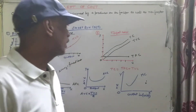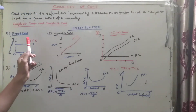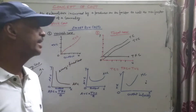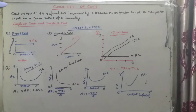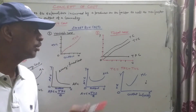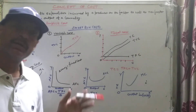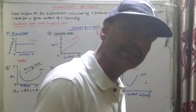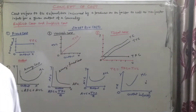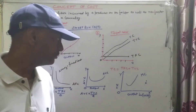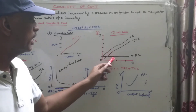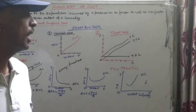Total cost is the sum of TFC and TVC — total fixed cost plus total variable cost gives you total cost. The TFC component remains constant, so the total cost curve runs parallel to the TVC curve.